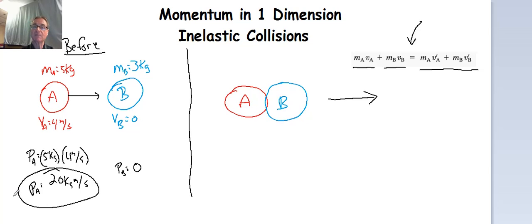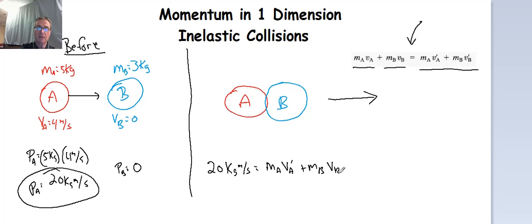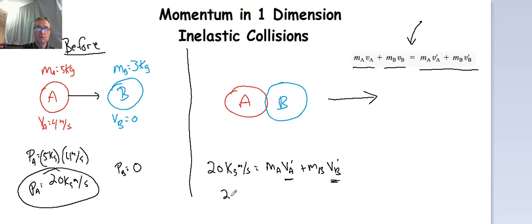And that's going to be the momentum after they collide as well. So 20 kilogram meters per second is going to equal the mass of A times the velocity of A prime plus the mass of B times the velocity of B prime. We know the mass of A and the mass of B — they haven't changed, they've just stuck together. Since they're stuck together, V_A prime and V_B prime have to be the same — if the objects are stuck together, they're moving along together at the same rate. So we're going to replace those with just V prime.